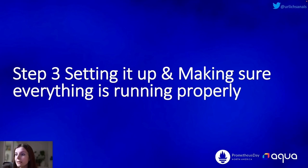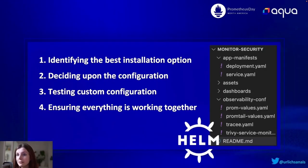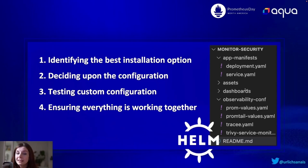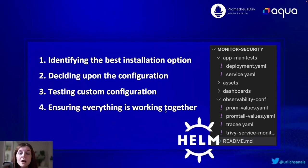That leads us to step three: setting it up and making sure everything is running properly — probably the most difficult step, requiring lots of trial and error. The process: identify the best installation options — I go by default with Helm, though installing directly via kubectl is also popular. Then decide upon the configurations for those Helm charts. You can see here a screenshot of my demo application where I have different values files passed into my Helm charts upon installation. Next, test the custom configurations — a lot of times things don't work as described in the documentation, so you have to test and ensure things are actually working together.